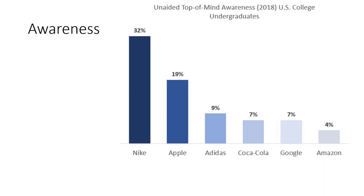According to the Student Monitor LLC report of 2018, when undergraduate college students in the United States were asked to recall from the top of their mind the first brand that pops into their head, it was one of these six brands. The example we just illustrated is what we might call a pure unaided awareness measure — aside from prompting you to think about a brand, I provided absolutely no other contextual information whatsoever.